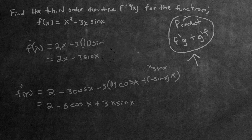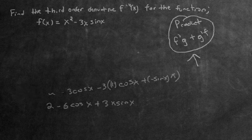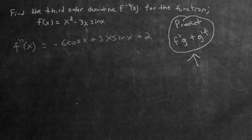We don't really need the first order anymore, so let's erase the top part and rewrite the second order derivative up here. Now let's find the third order derivative — the last one the question actually wants. So what is the derivative of the first term, negative 6 cosine x?